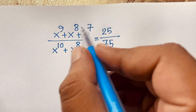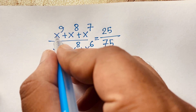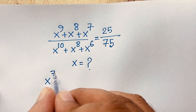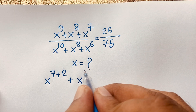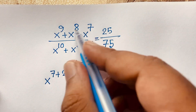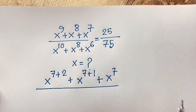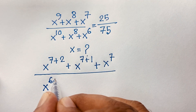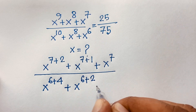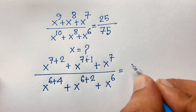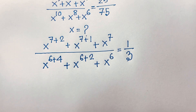So let's start. The smallest exponent in the numerator is x to the power 7. So x to the power 9 becomes x to the power 7 plus 2, x to the power 8 becomes x to the power 7 plus 1, and we have x to the power 7. In the denominator, the smallest exponent is 6. So x to the power 10 becomes x to the power 6 plus 4, x to the power 8 becomes x to the power 6 plus 2, and x to the power 6. The right-hand side 25 over 75 simplifies to 1 over 3.